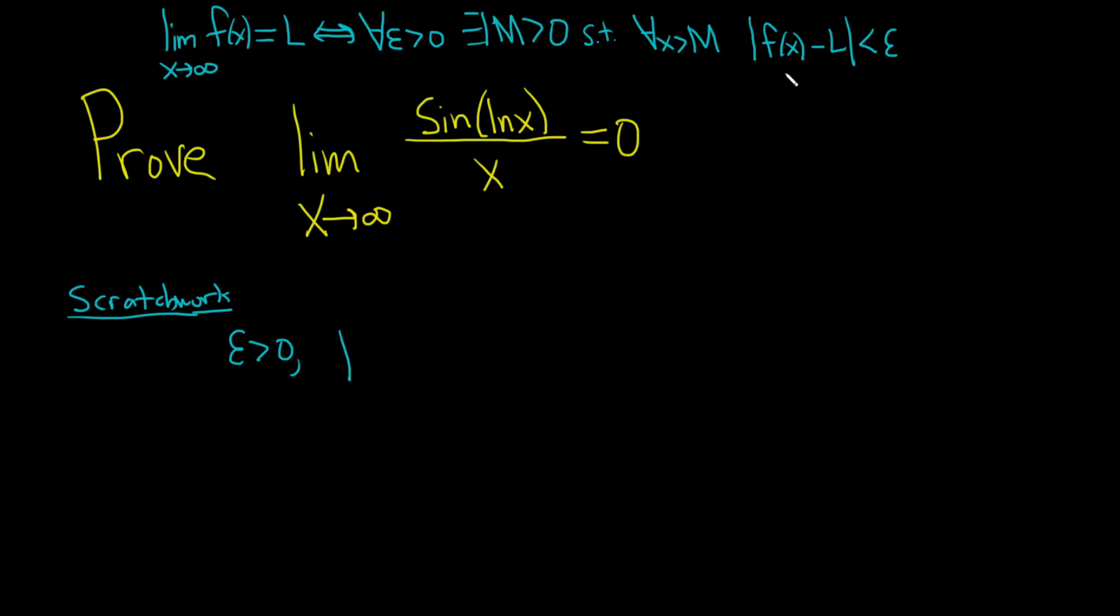So we have an epsilon greater than zero and we need to find an M and we want the distance between f of x and L to be less than epsilon. So our f of x is this function here, sine of the natural log of x all over x. And then L is zero, so minus zero. I want this to be less than epsilon. So when we subtract zero, we really just get sine ln x over x, and we want this to be less than epsilon.